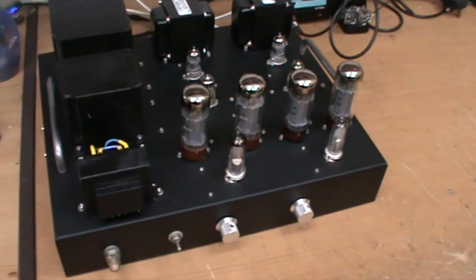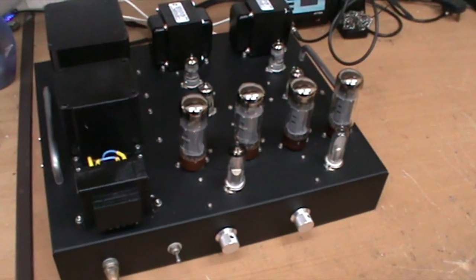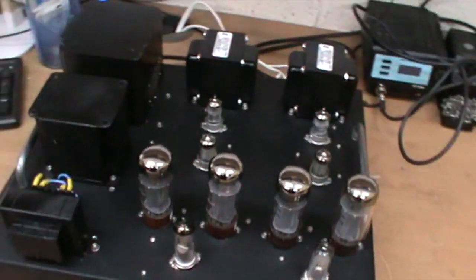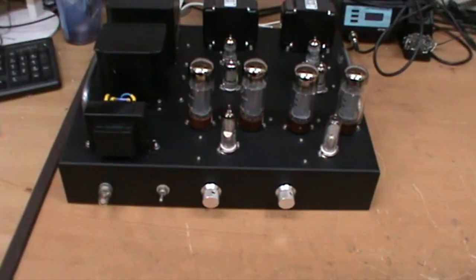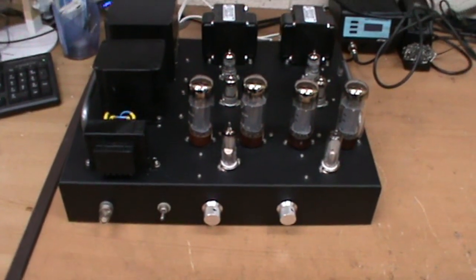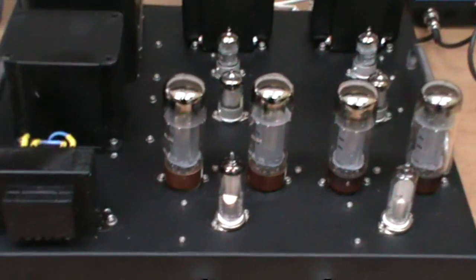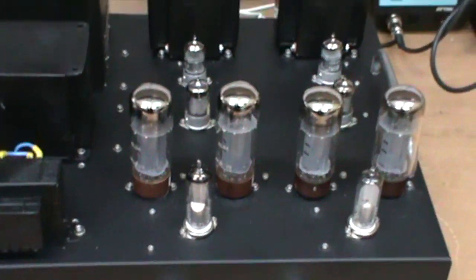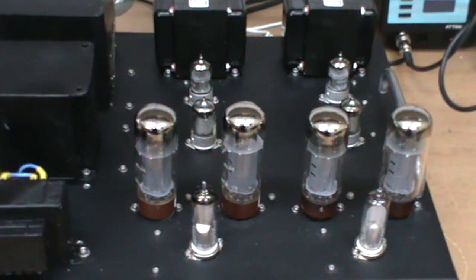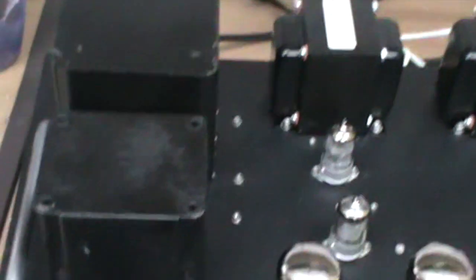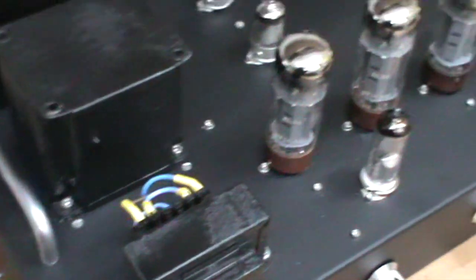Here it is - my homebrew stereo amplifier with all the valves. It's pretty standard circuitry, basically based on the Mullard 520 design with a few modifications. I'll take you through the various stages and show you underneath.